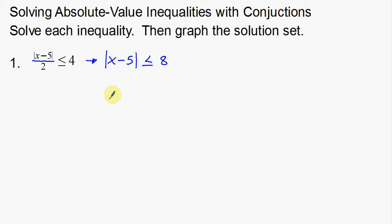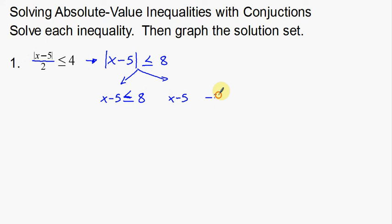Now I can split everything up and write my two inequalities. First split: x minus 5 is less than or equal to 8. Second split: x minus 5, and I change positive 8 to negative 8. Once I change that sign, I also have to change this symbol to greater than or equal to — when you change that sign, you also change the inequality symbol around.